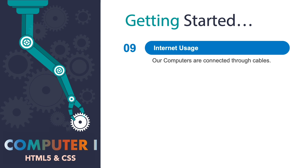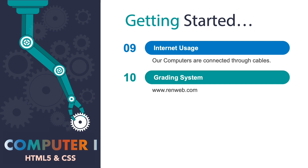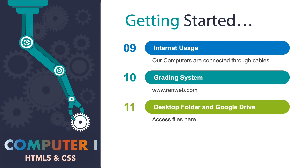Number nine: internet usage — our computers are connected through cables. Number ten: the grading system, which will be accessed through www.renweb.com. A separate video will be provided online on how to create your account in Renweb if you are new to this website. Number eleven: desktop folder and Google Drive — you can access your files here, which includes the ebook, the course outline, and lesson files as well.